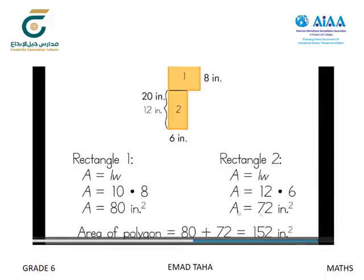Finally, they add the areas to find the total area of the polygon: 152 square inches.